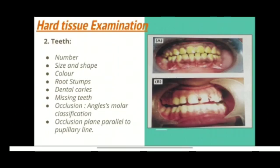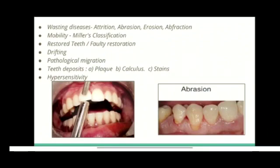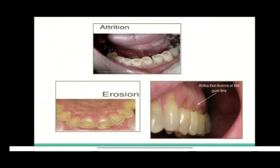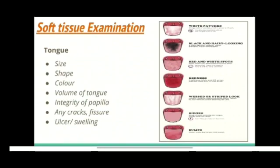We also assess whether the occlusal plane is parallel to the pupillary line, and if any wasting diseases like attrition, abrasion, erosion, or abfraction are seen. Tooth mobility is classified using Miller's classification. We check for any restored or faulty restorations, any drifting or pathological migration, and teeth deposits like plaque, calculus, and stains, or if any hypersensitivity is seen. These are the pictorial representations of wasting diseases.